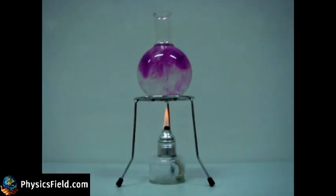This movement of the liquid, due to a difference in its density, sets up a convection current as you see in this video.